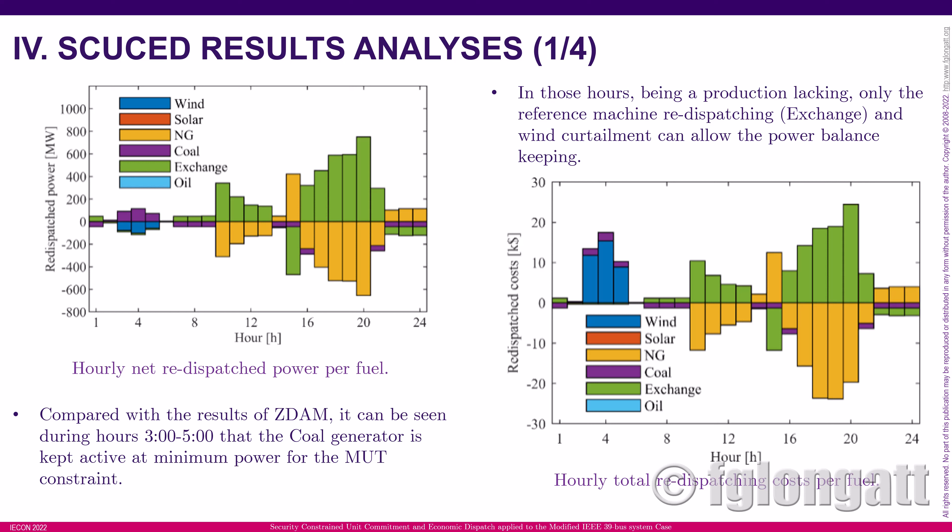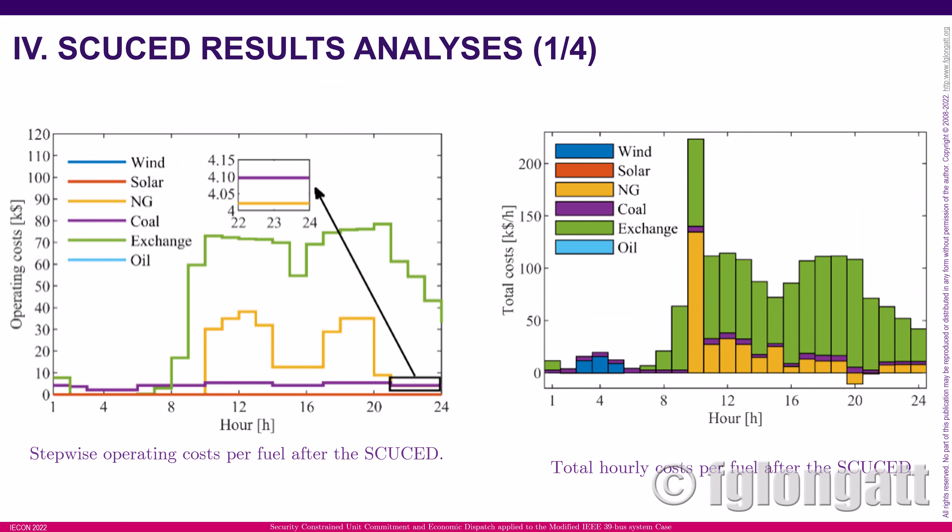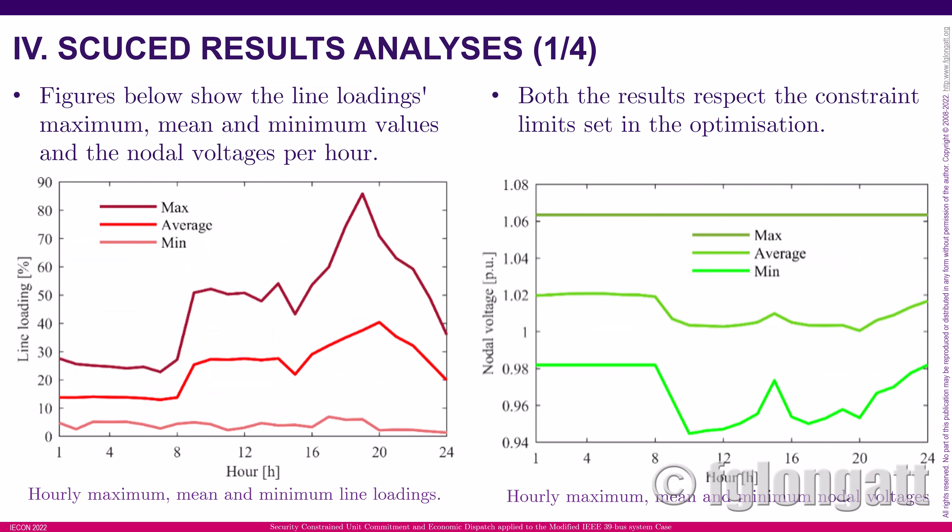On the right-hand side, we have a plot indicating the redispatch costs in thousands of monetary units. There are some positive and negative costs, especially at hours 19 and 20. We also present results showing the operating costs and fuel usage for ensuring the security constrained unit commitment and economic dispatch, as well as the total hourly cost per fuel after executing the proposed approach. Finally, line loadings and nodal voltages are presented to confirm that loading and voltages are within security limits.